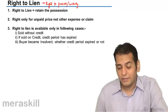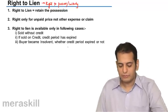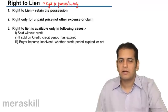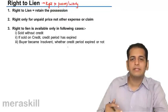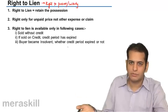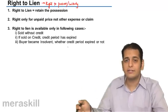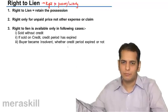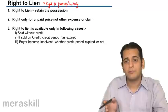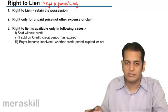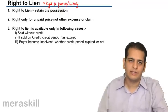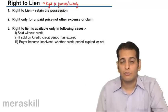The right to lien is also available when the buyer has become insolvent, whether or not the credit period has expired — it does not matter. So the right to lien is available: when goods are sold without credit and price is not paid; when goods are sold on credit and the credit period expires with price unpaid; and when the buyer becomes insolvent.